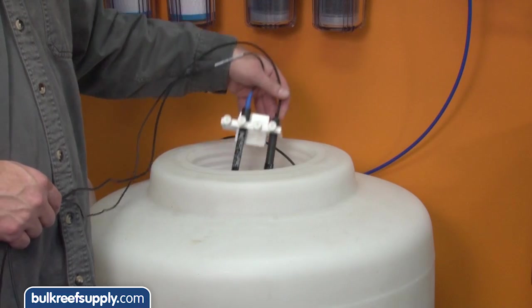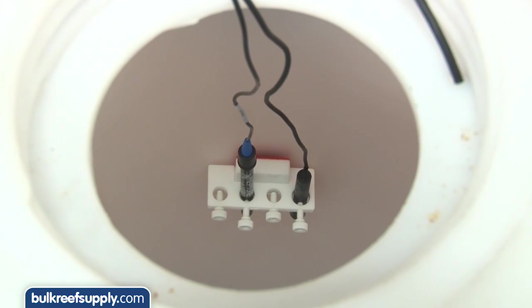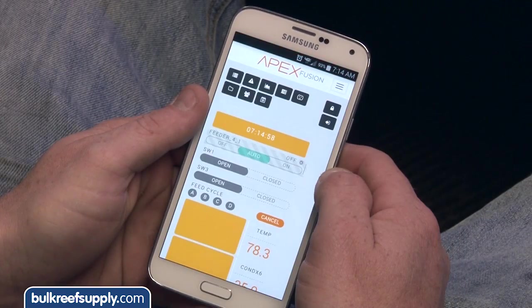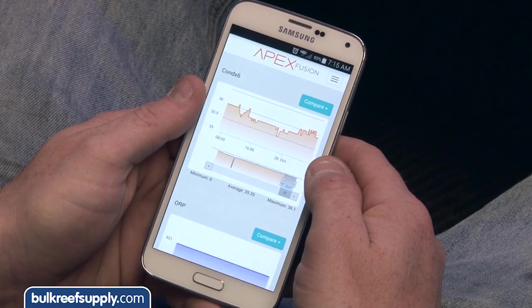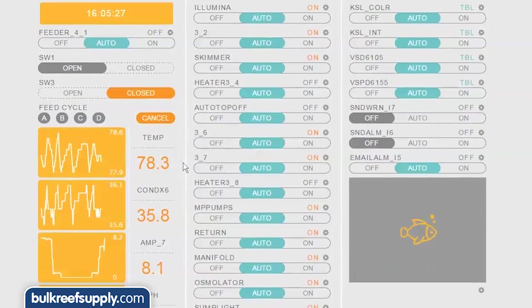Some reefers may also select to put a PM2 on their salt water mixing bin or RODI storage container if they can run an aquabus cable there. Pretty nice to be able to open up fusion on your phone and see the salinity of the mixing or storage container, and should result in less trips down to check on it and adjustments.